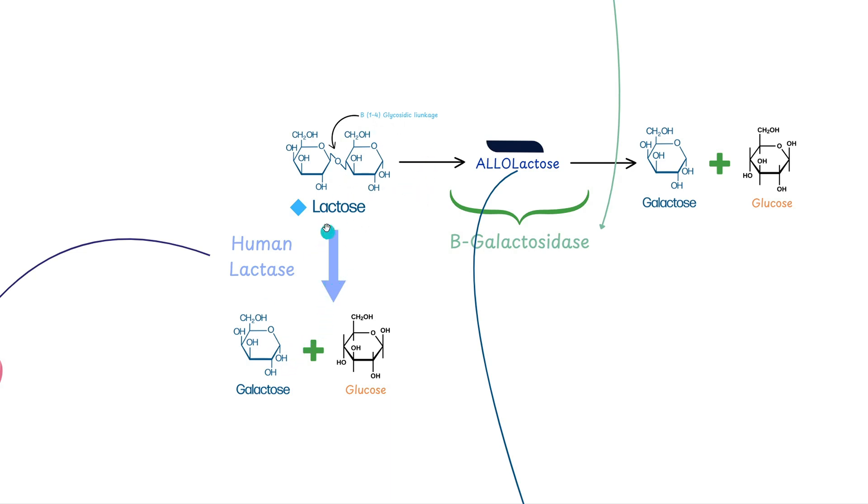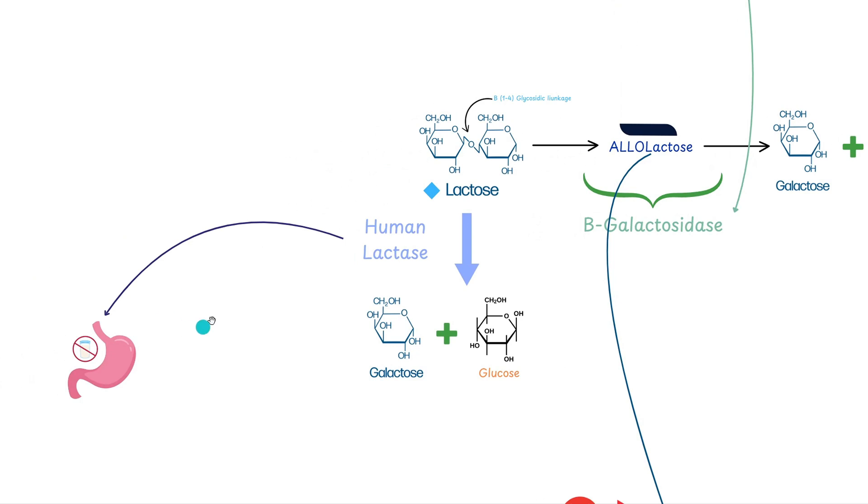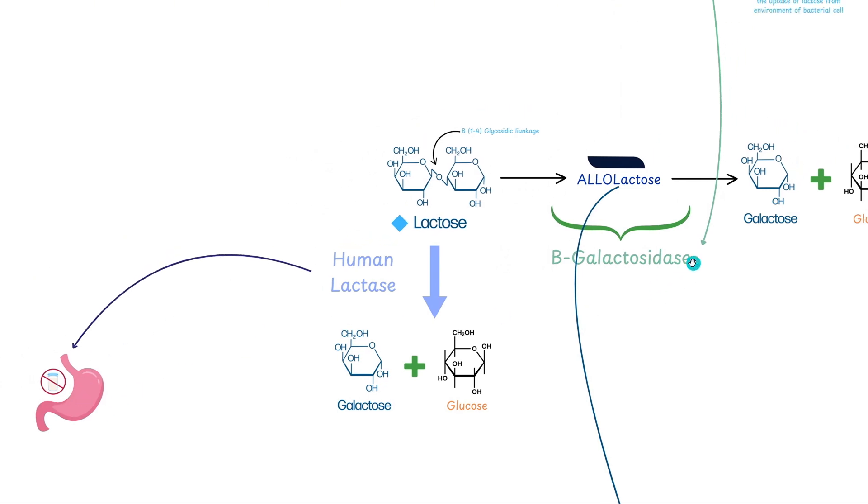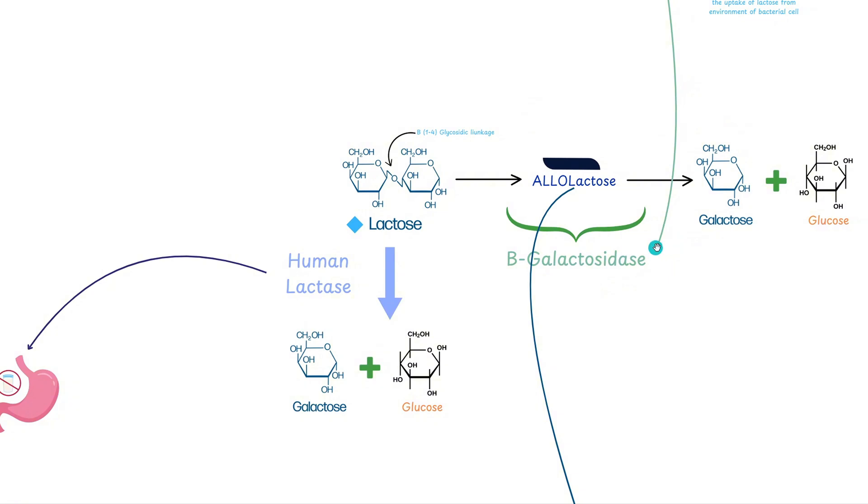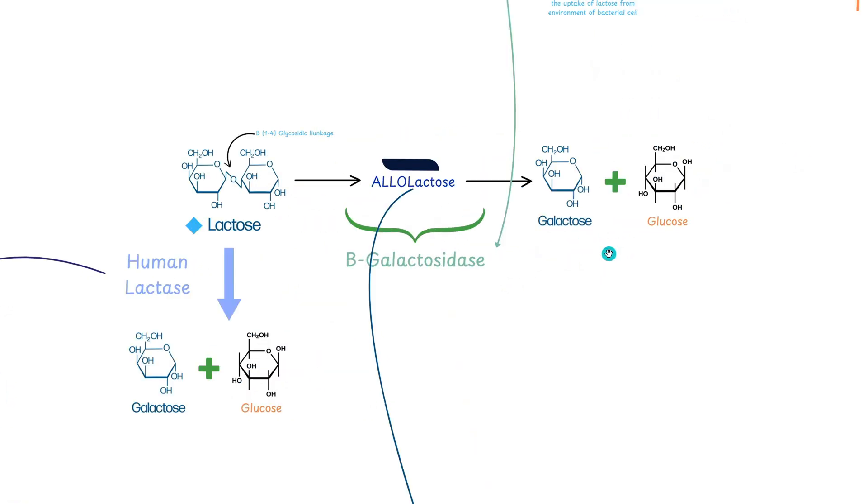In lactose intolerance people, lactase production is actually low or almost absent, allowing undigested lactose to actually go through this process here in the large intestine where E. coli take over and break it down. This causes production of gas and bloating and discomfort overall. That's why lactose intolerant people have an overall hard time digesting the lactose sugar in milk. And this is why bacteria thrive also in lactose intolerance cases, because their lac operon is switched on.